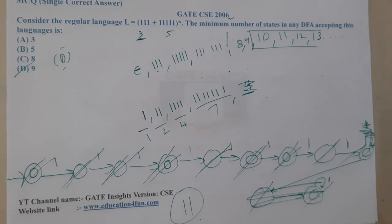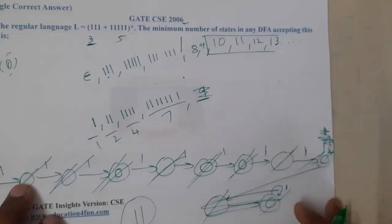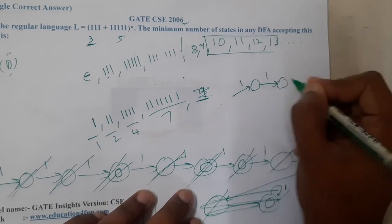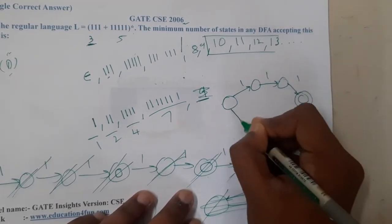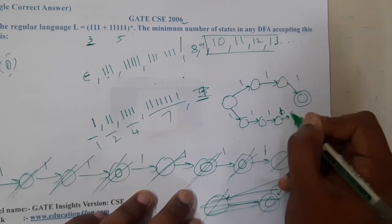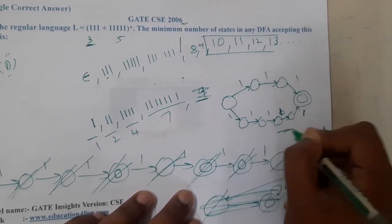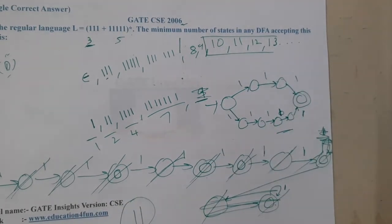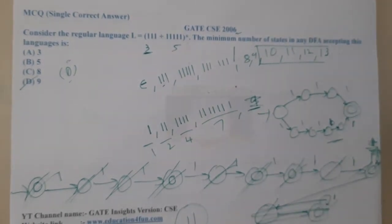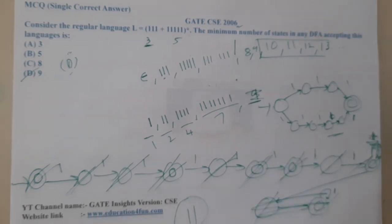For students who did not understand this trick in the examination, the best method is to draw the NFA for it. The NFA is quite easy: one, two, three, four, and five states. Then convert this NFA into DFA using the traditional method, and at the end you will still get nine as your answer.